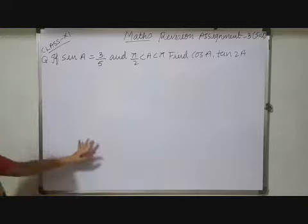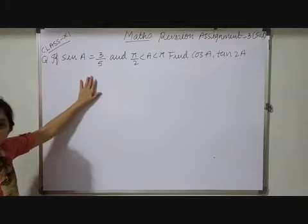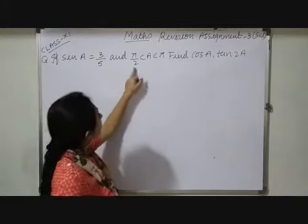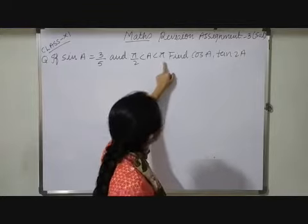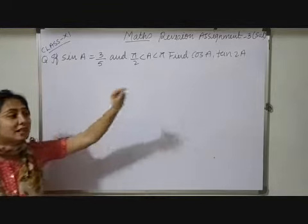Now students, here the question is: if sin A is given as 3/5 and π/2 < A < π, less than π. Here the angle is given in the second quadrant.